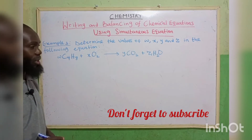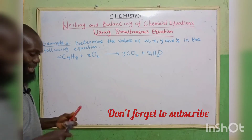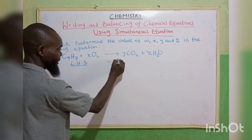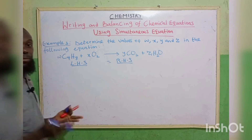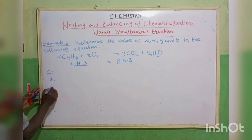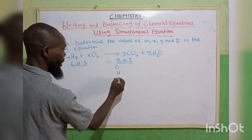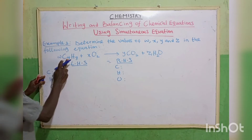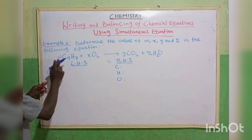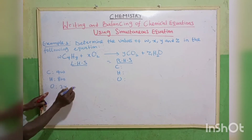Example 3. Determine the values of w, x, y, and z in the following equation. Left hand side equals right hand side. The elements are carbon, hydrogen, and oxygen on both sides. On the left: carbon is 4 times w giving 4w; hydrogen is 8 times w giving 8w; oxygen is 2 times x giving 2x.